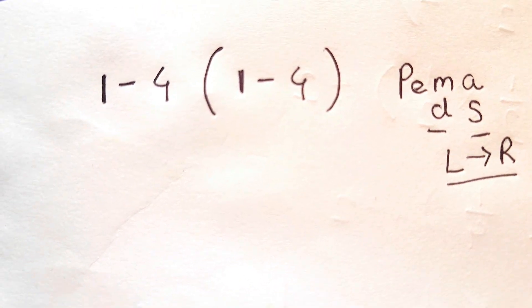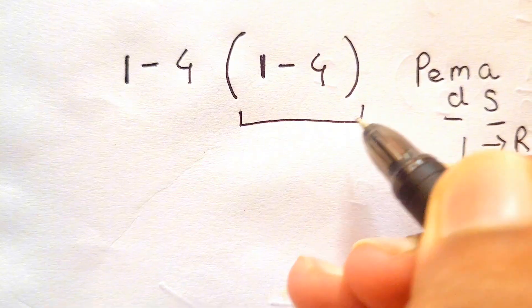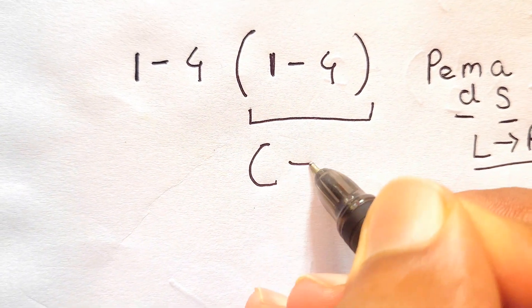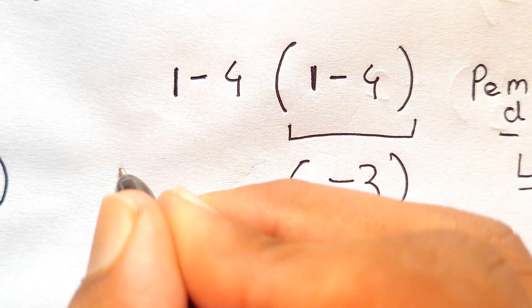So let's try solving this. In the expression, as we can see there is parenthesis, so first we need to solve this 1 minus 4 in this parenthesis. So it gives us negative 3. So we'll write negative 3 here.